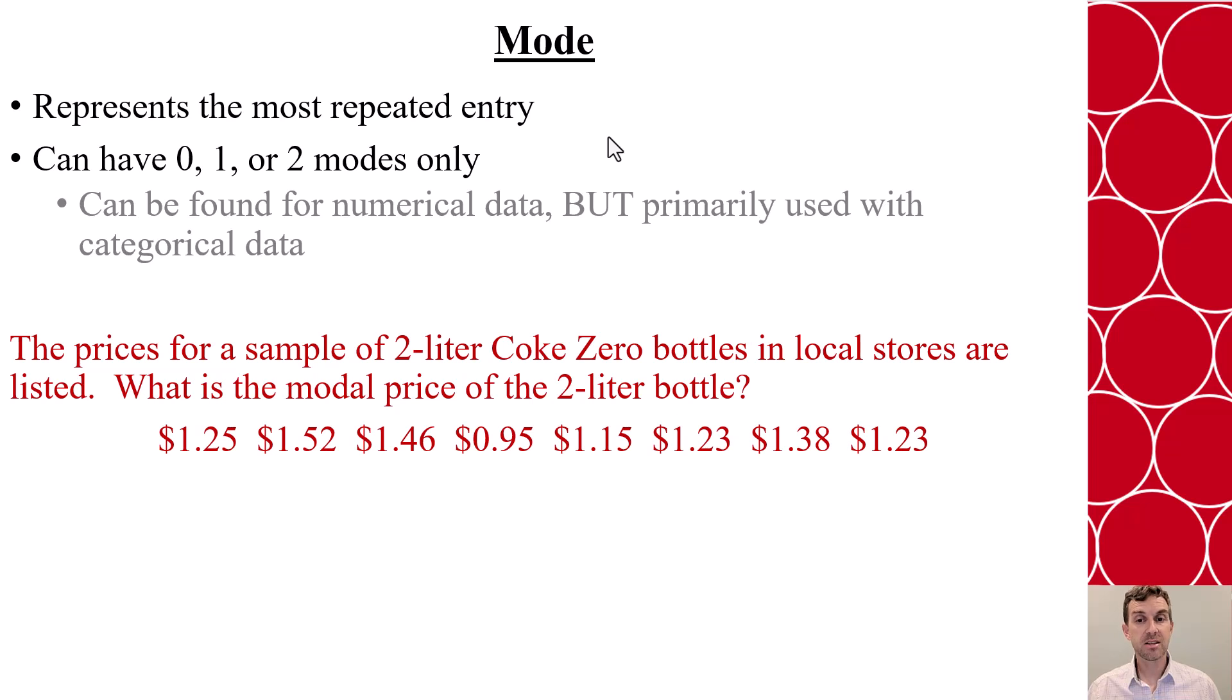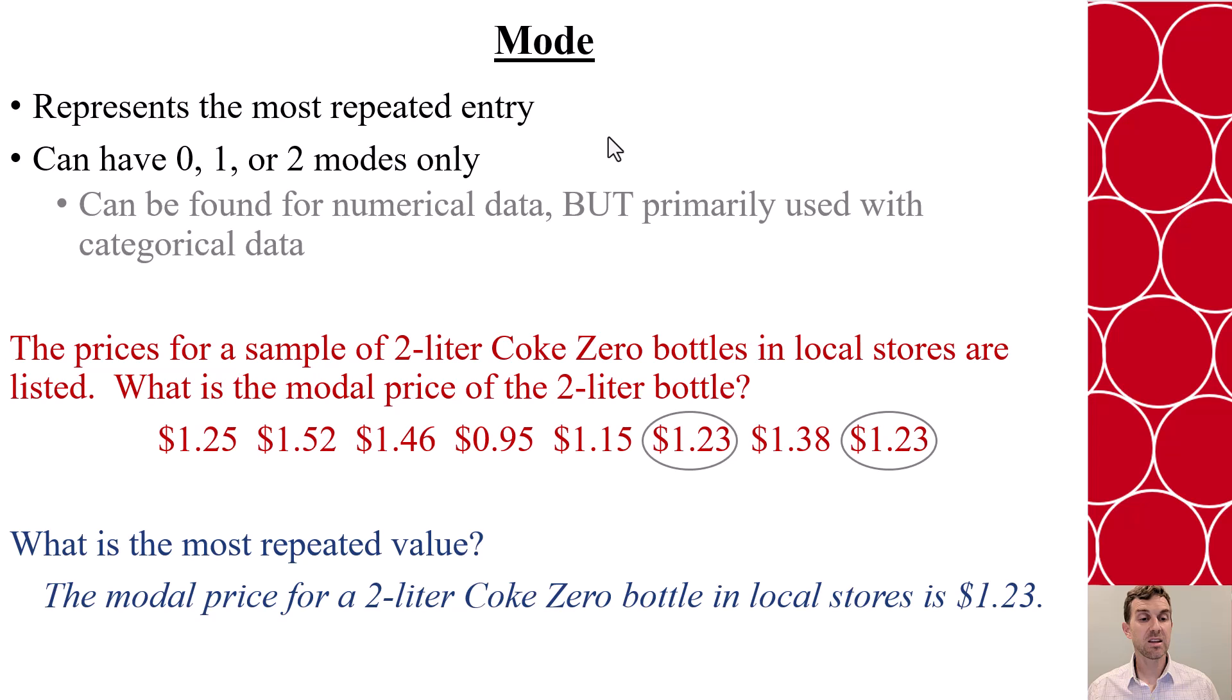So if we go back to our data set again and look for the modal price, we see that the most repeated value in this case is the $1.23. Since it's $1.23, we would say that the modal price for the Coke Zero bottle in our local stores is about $1.23.